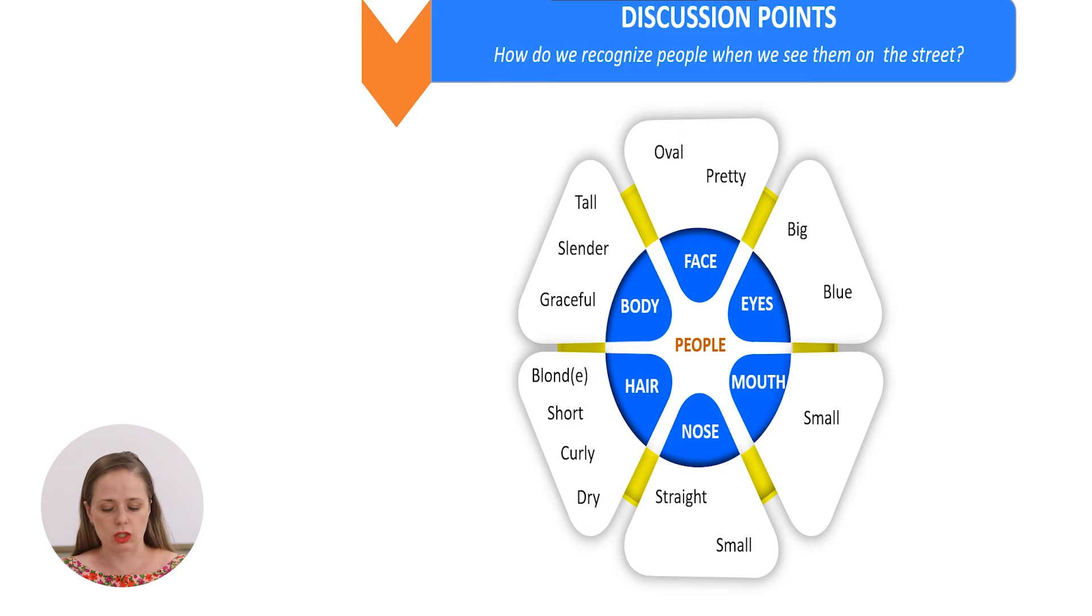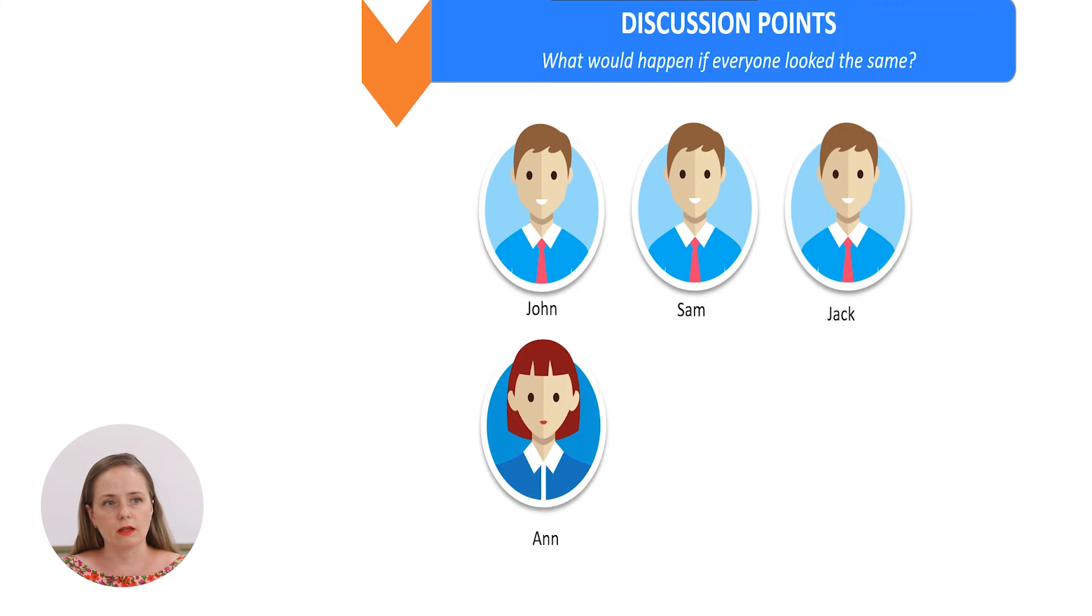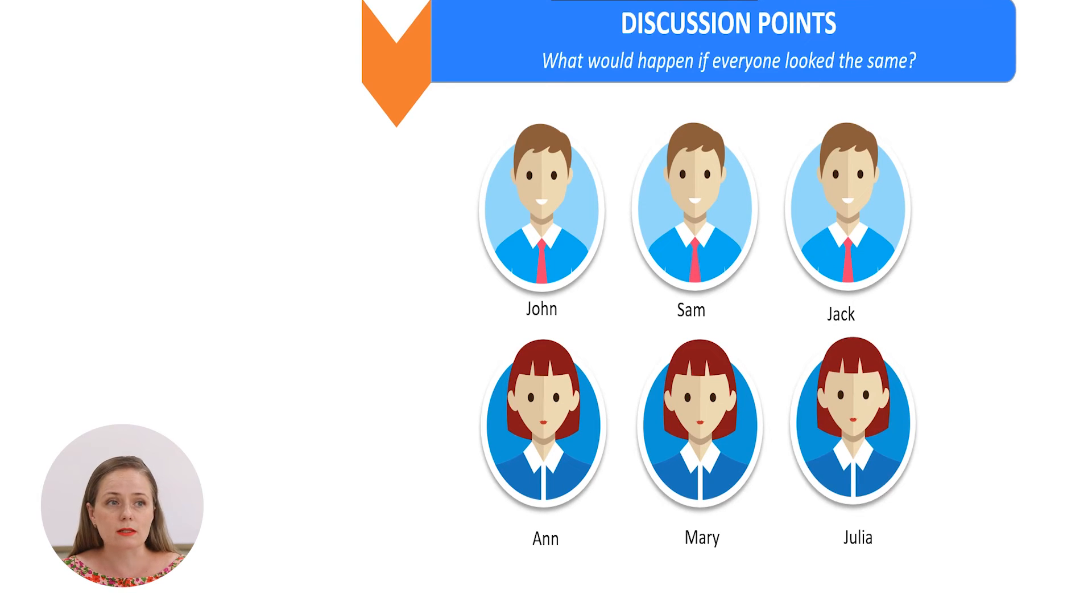Now, imagine all the people in the world or all the people around you look the same. How would that be? Let's see. Imagine, this is John. This is one of your friends. This is Sam. This is Jack. How would she know that this is Jack and this is Sam? They all look alike. This is Anne, this is Mary and this is Julia. This is the situation when everybody looked the same. Do you like it? Would you like that everyone looked the same? I am not sure that the world would look very nice if everyone looked the same.